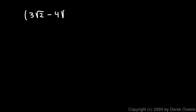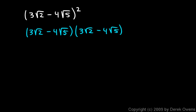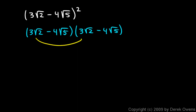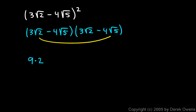Let's look at one more example: 3 times the square root of 2 minus 4 times the square root of 5, squared. For something to be squared, that means it's multiplied by itself. So we write 3 root 2 minus 4 root 5 times 3 root 2 minus 4 root 5, and work out the FOIL. The first two terms: 3 times 3 gives me 9, and square root of 2 times square root of 2 gives me square root of 4, which is 2. The outer two terms: 4 times 3 is 12, and square root of 2 times square root of 5 is square root of 10.